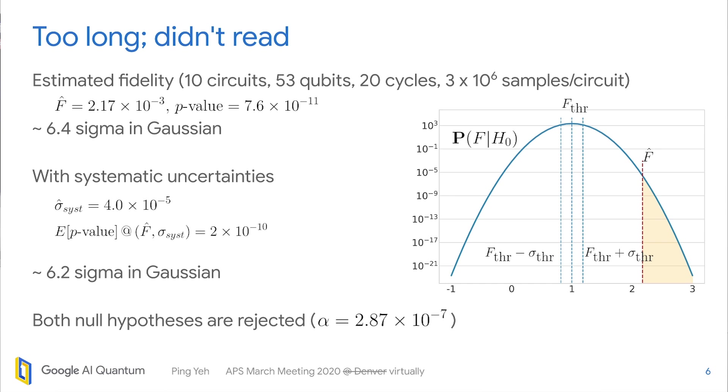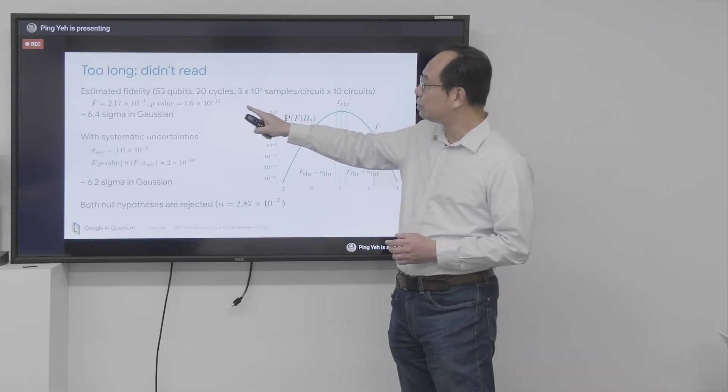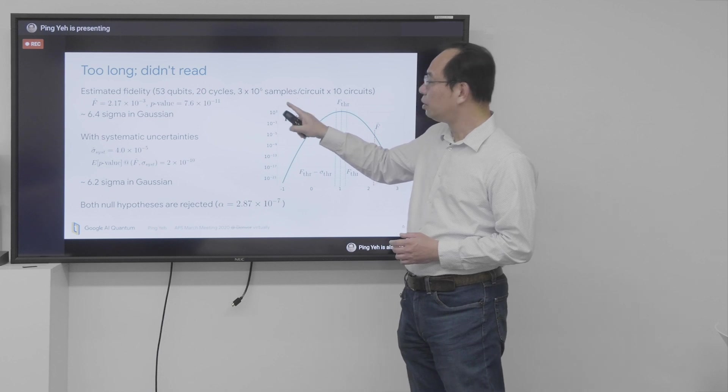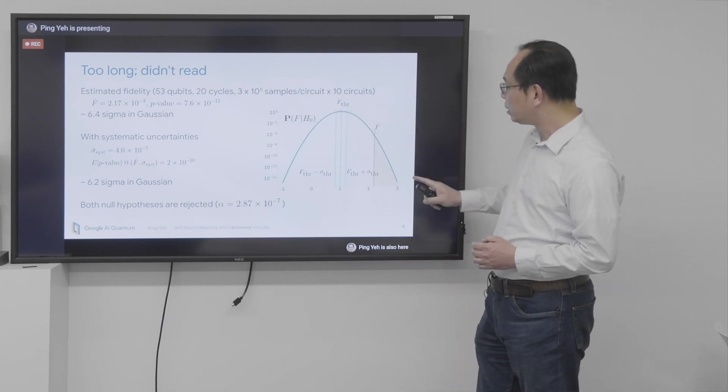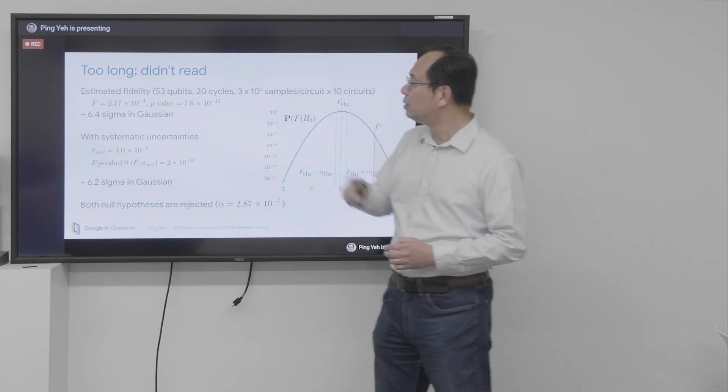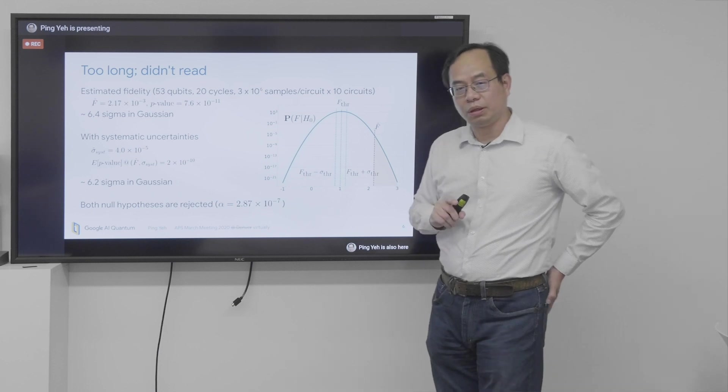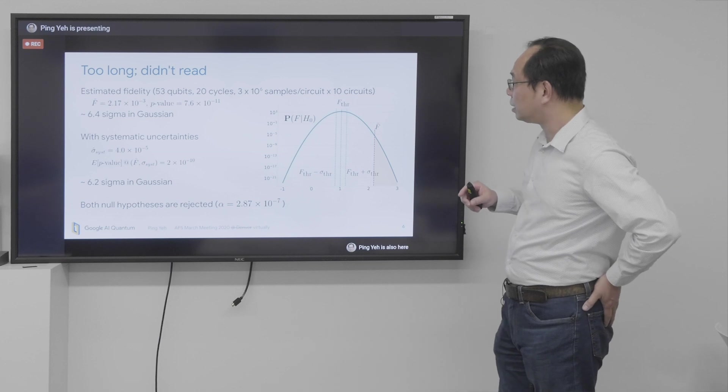So the TLDR is that with 53 qubits, 20 cycles of circuit, and 3 million samples per circuit with 10 different random circuits, we come up with an F hat of this value, which corresponds to a p-value of about 6.4 sigma in Gaussian. So that, of course, is above 5 sigma. So that's good.